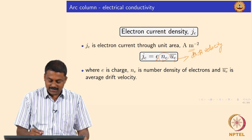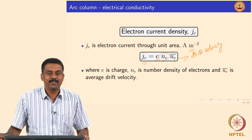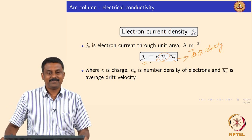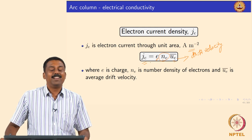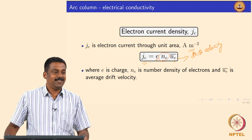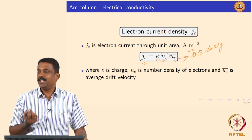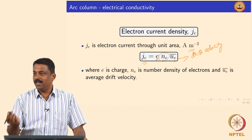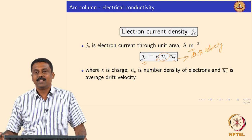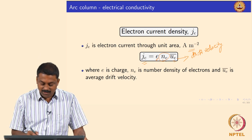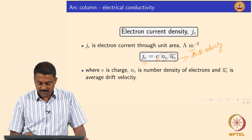The electron current j_e equals the elemental charge of an electron — measured by Millikan's oil drop experiment — times the number density n_e, times the drift velocity. This gives the current density. We know n_e, we can get e from Millikan's experiment. For the drift velocity, we must account for collisions: electrons collide and drift; they do not travel a free path. Resistance is created by these collisions, so we use drift velocity, not thermal velocity.